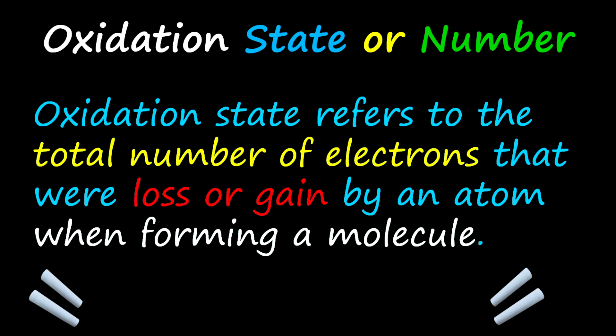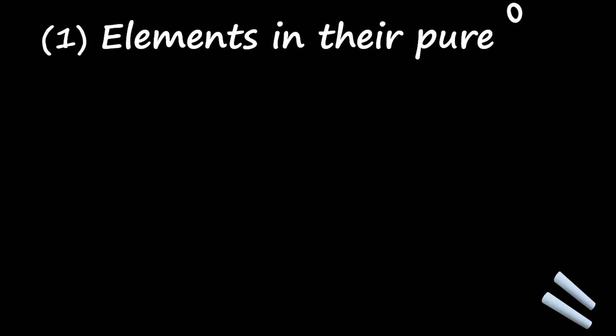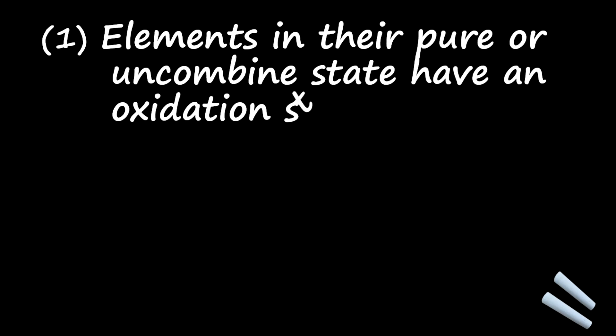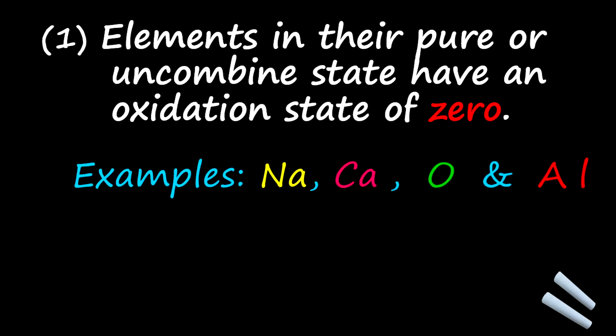Now let's jump into the rules. One of the first we're going to look at is that elements in their pure or uncombined state have an oxidation state or number of zero. Some examples of elements in their pure state include sodium, calcium, oxygen, and even aluminum. And the list continues.